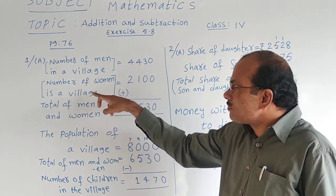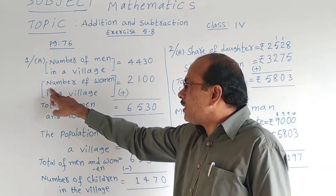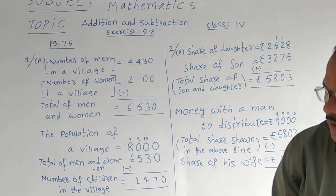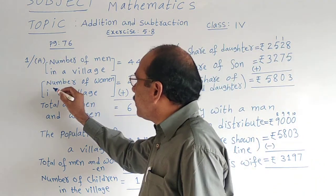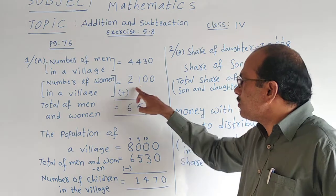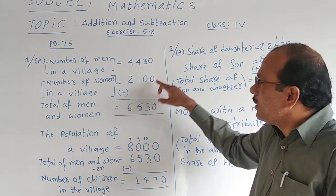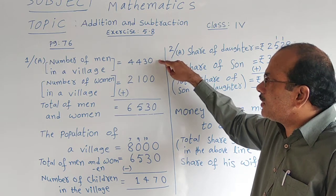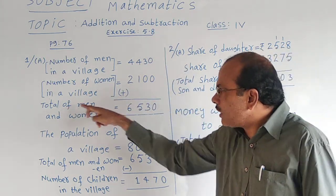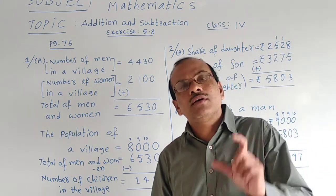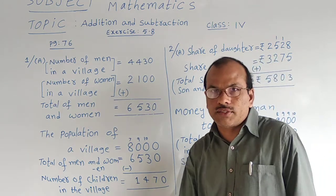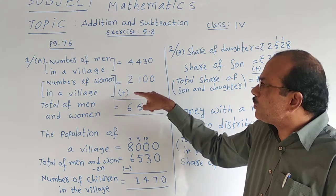Number of women in the village is equal to two thousand one hundred. So four thousand four hundred thirty are men, two thousand one hundred are women. We want the total of men and women. Why? Because to find the number of children in the village. Total means addition, so we should add them.